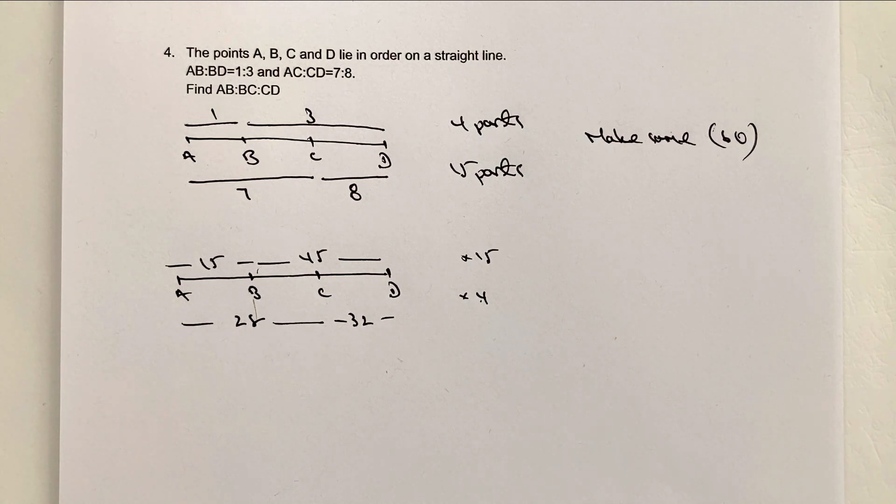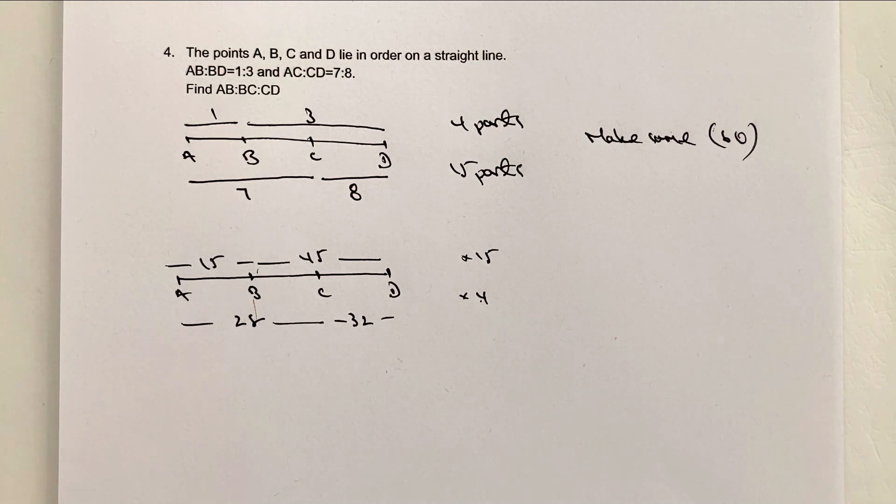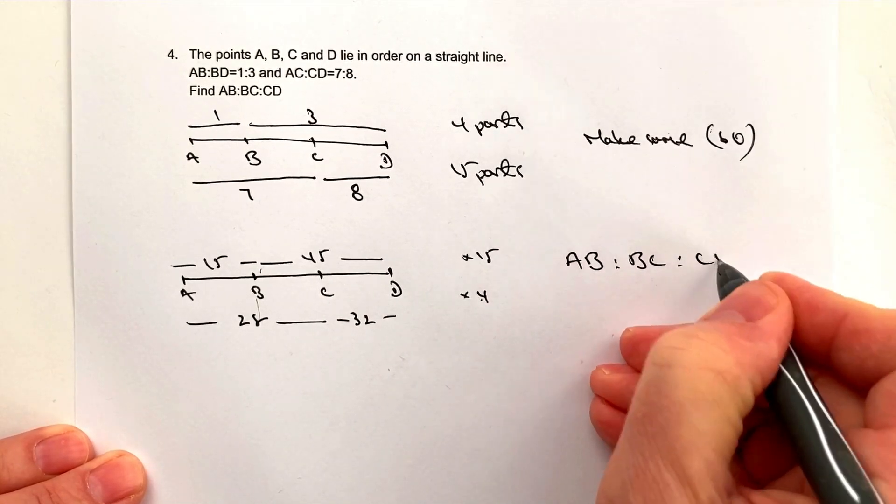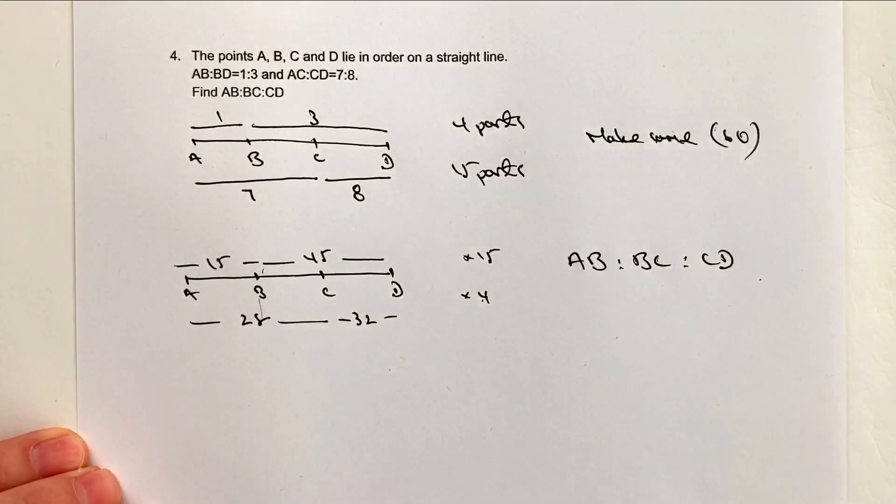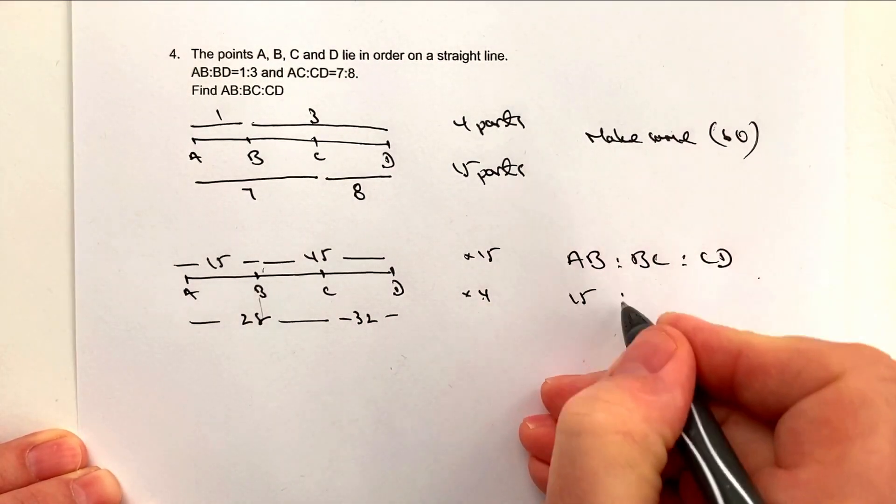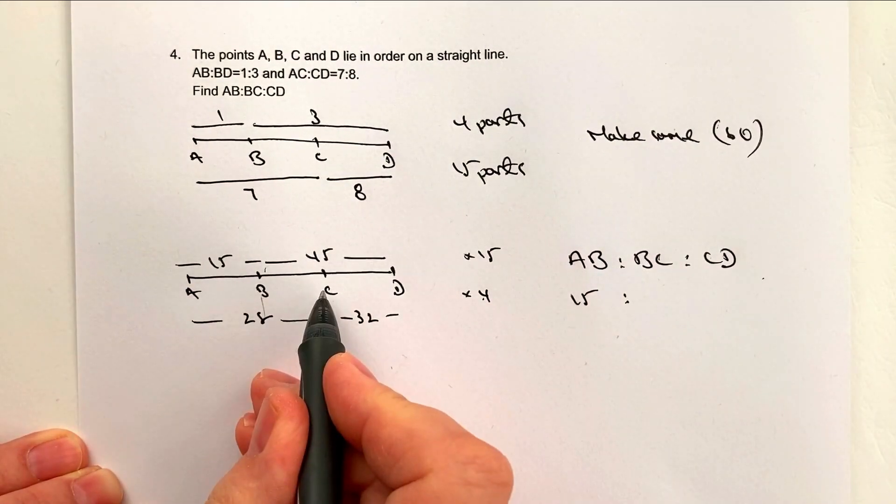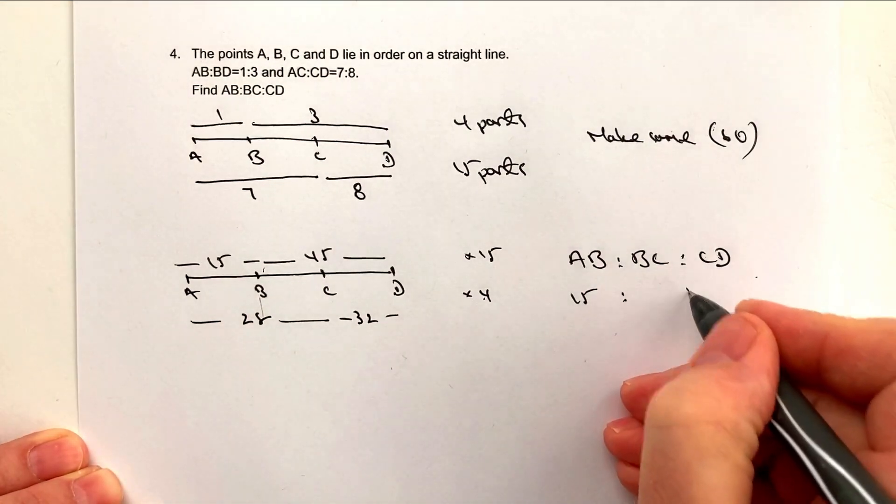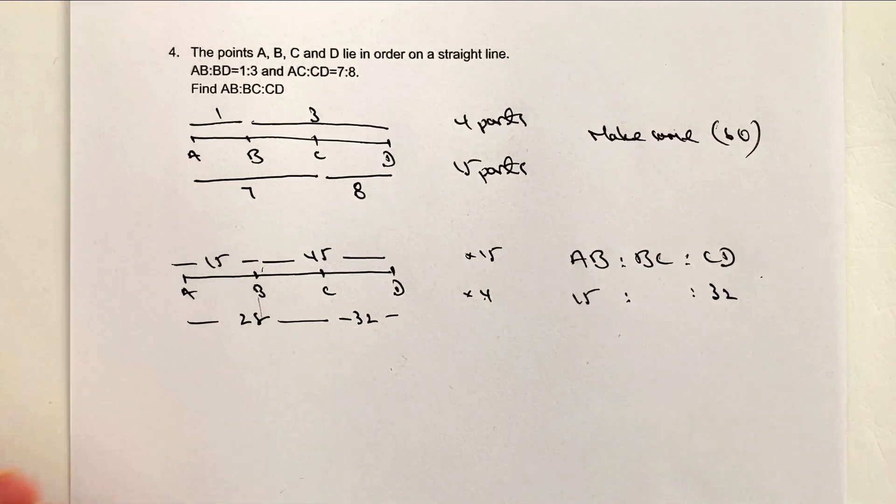So I've got AB to BC to CD. Let's have a look at that then. So A to B, well that's easy enough, that's 15. B to C, I don't know, I'm not going to worry about it just at the moment. C to D is going to be 32.